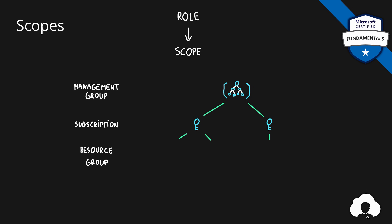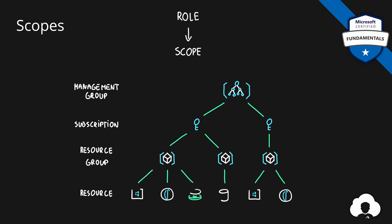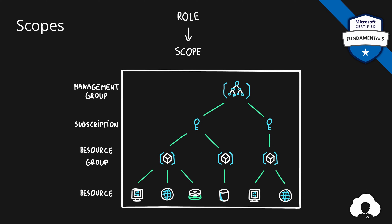Under each subscription you will have multiple resource groups, and since resource groups are a logical container for resources, under them you will have your own resources. When you assign a role to a scope, you can assign it at any level. If you assign it on a management group level, that role will be inherited by all child resources — propagated across all subscriptions, resource groups, and resources within that management group.